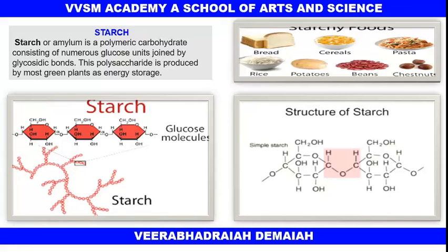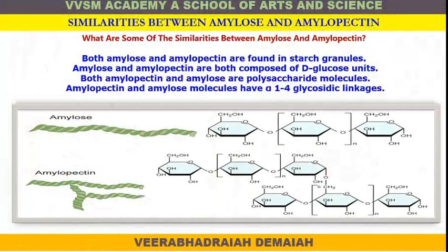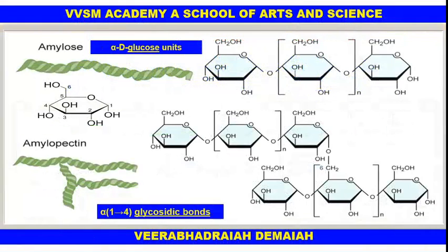This is the structure of starch — the glycosidic linkage is an ether bond — with many glucose molecules. Amylose and amylopectin are found in starch granules. This is amylose, a straight-chain structure, and this is amylopectin, a branched structure. In amylose there are alpha 1,4 glycosidic linkages, while amylopectin has both alpha 1,4 and 1,6 glycosidic linkages.